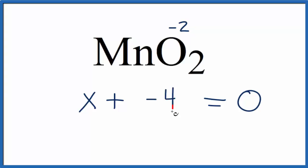That's a minus four. Then to solve for X, we add four to both sides, so we can cancel out the minus four, and that gives us X equals plus four. And that's the oxidation number on the manganese, the Mn, in this MnO2 compound.